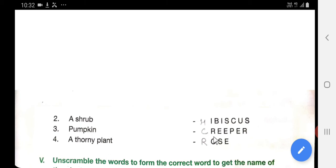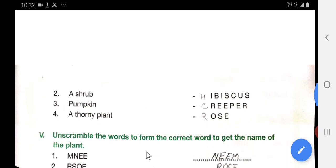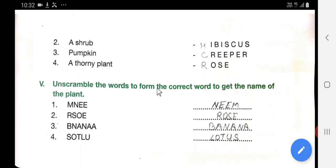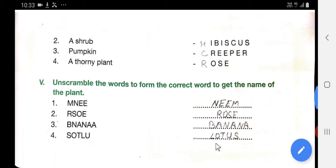Pumpkin is a creeper. Thorny plant is a rose. Unscramble the words to form the correct word to get the name of the plant. The first one is MNEE. The second one is RSOE. If we correct this, what will become? Rose. The third is banana. If we correct this, what will become? Lotus. L-O-T-U-S.